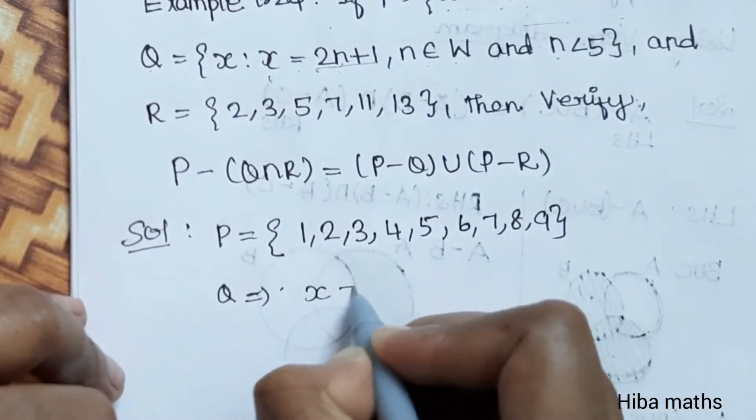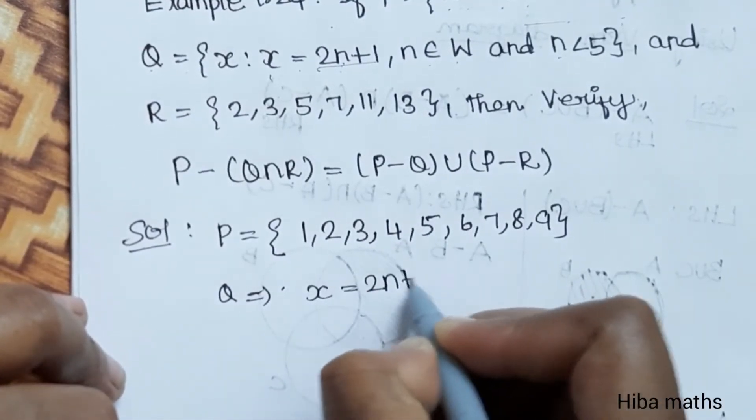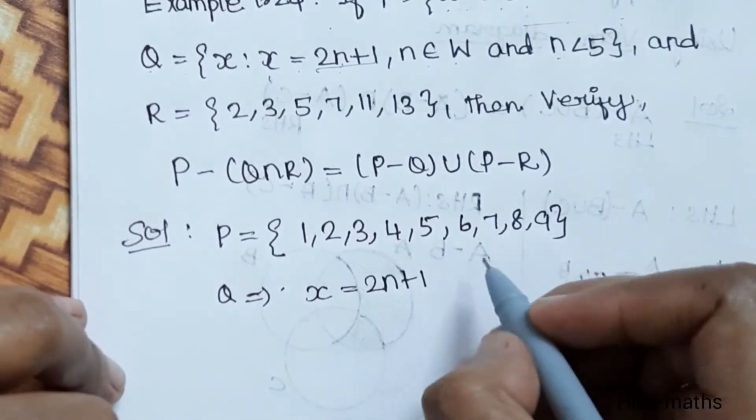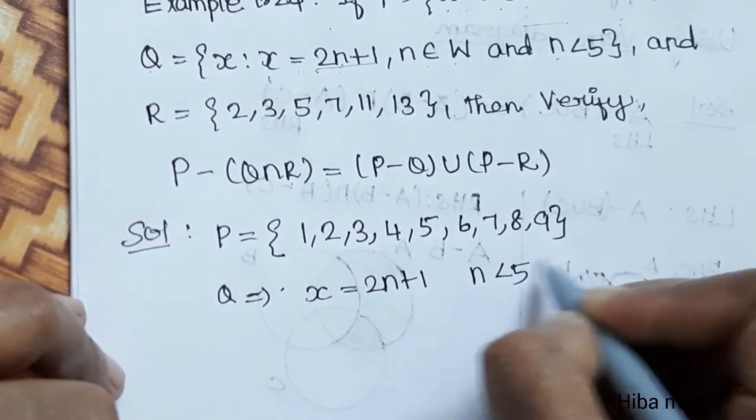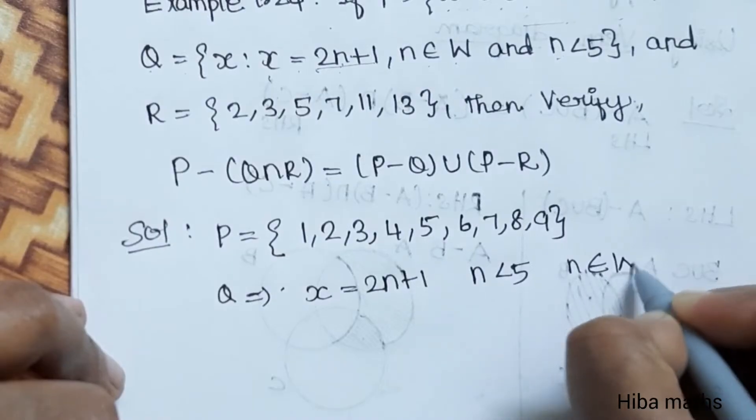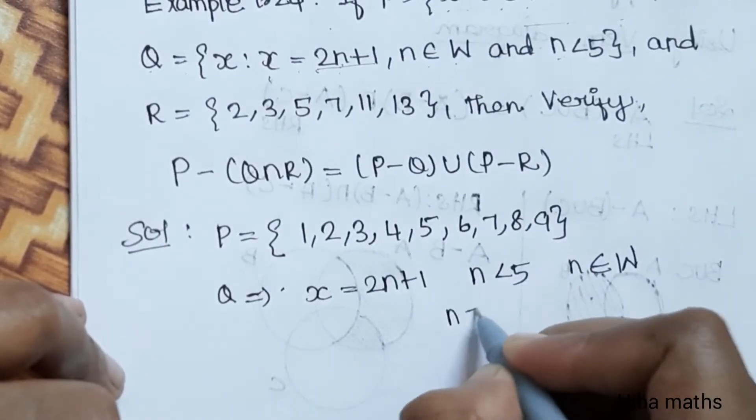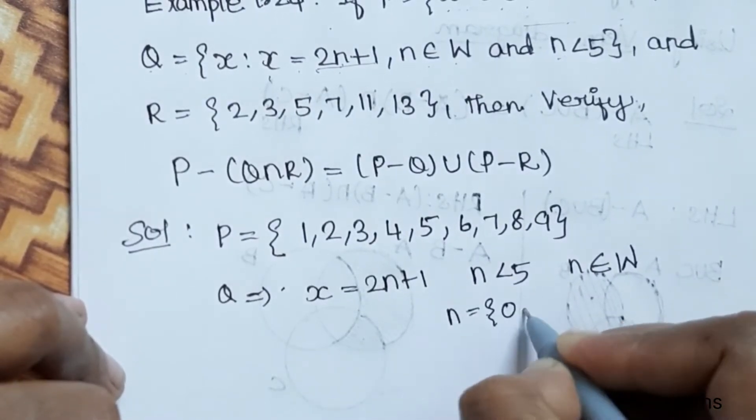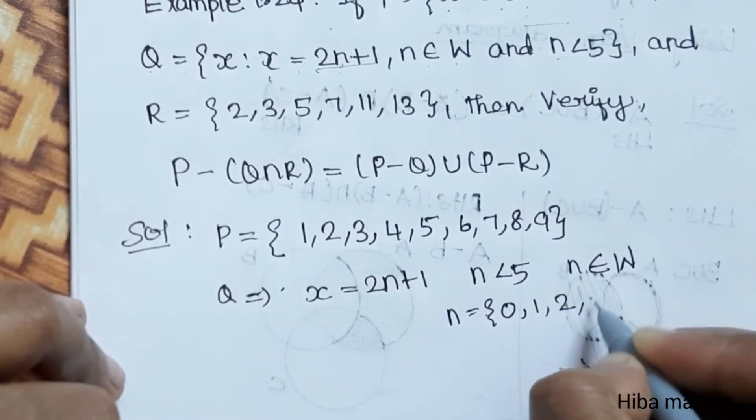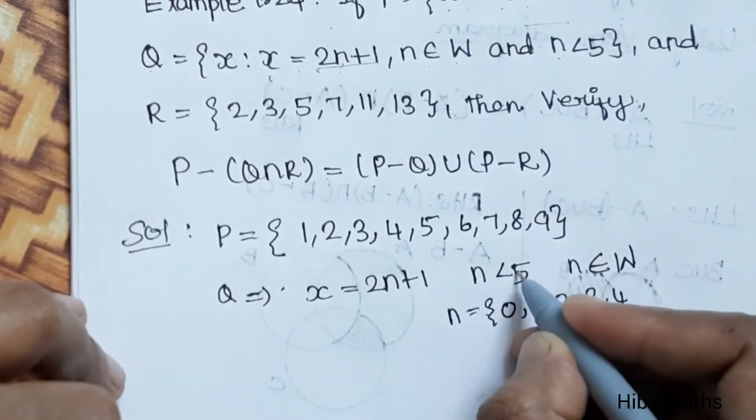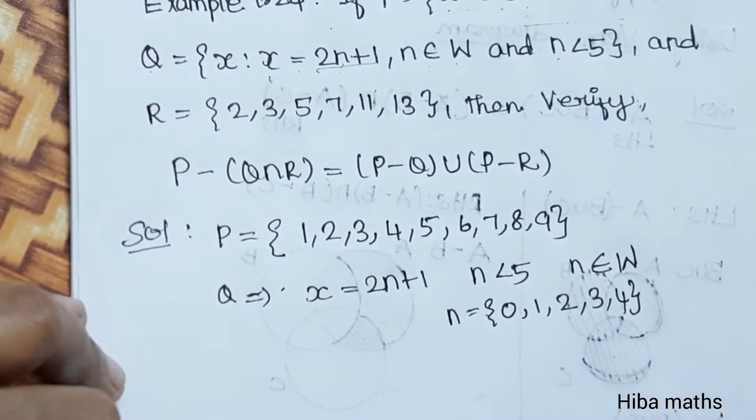Q is equal to x equals 2n plus 1, with n less than 5 and n is an element of whole numbers. Whole numbers are 0, 1, 2, 3, 4. Less than 5, so we use 0, 1, 2, 3, 4.